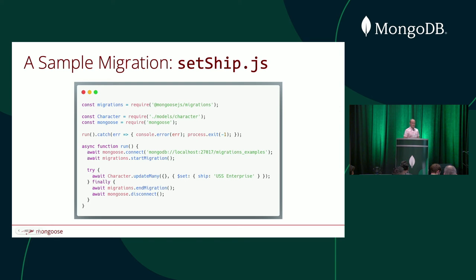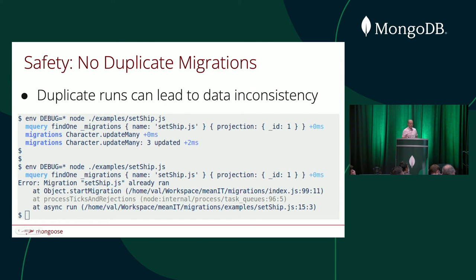Let's go into more detail about what the migration framework gives you from a more concrete perspective. In a sample migration: import the migration framework, which registers a bunch of Mongoose middleware to intercept all update operations. Import a character model, import Mongoose, connect to Mongoose, call start_migration to tell the framework I'm starting a migration, and then update every single character's ship property to the string 'USS Enterprise.' We don't want to allow duplicate migrations, so if I run set_ship once and it works, and then I run set_ship a second time, it tells me: migration set_ship already ran.